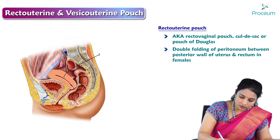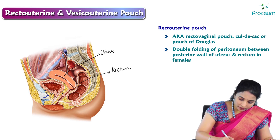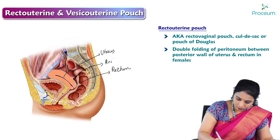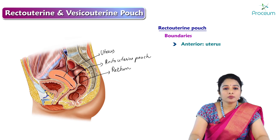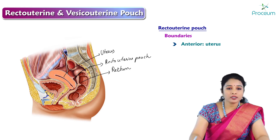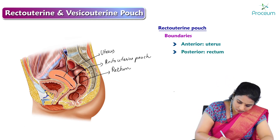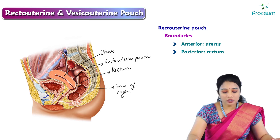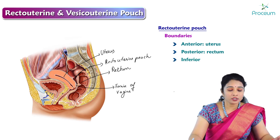Here is the uterus, and this one is the rectum, and the pouch between the rectum and the uterus is this peritoneal reflection. Now let's see the boundaries of this pouch. Anteriorly it is bounded by the posterior wall of the uterus and the posterior fornix of the vagina. Posteriorly it is bounded by the rectum, and inferiorly it is bounded by the peritoneal recto vaginal fold.